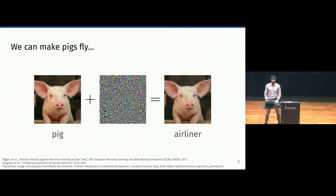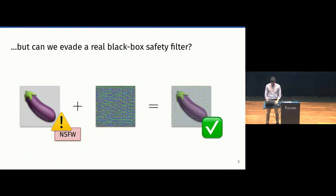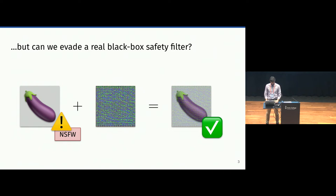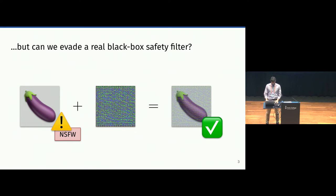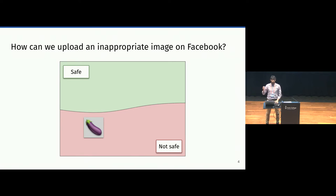But what happens if we do not have access to the gradient? So if the model is actually a black box. For instance, we take the example of uploading a not safe for work image on a platform that wants to filter out unsafe content. In this specific case, we don't have access to the gradient. We can interact with the system, and we can only observe the label that's assigned by the system. And we want to make sure that our attack works, so we cannot use a transfer attack.